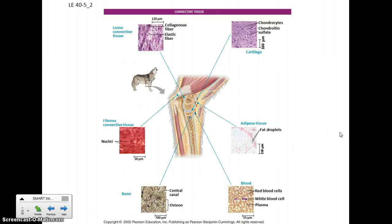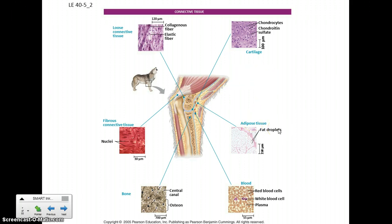Connective tissue includes bone and blood, tendons and ligaments — tendons holding muscle to bone and ligaments holding joints together, bone to bone. Fat tissue is also included here. A very abundant material, collagen, makes up a large portion of this connective tissue.